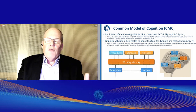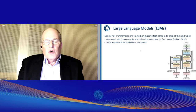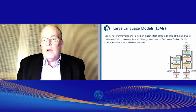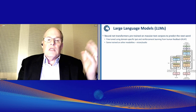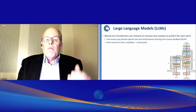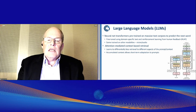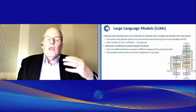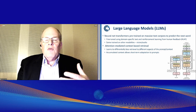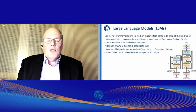We've seen a flood of work on language models. My quick way of describing them: they are neural net transformers pre-trained on massive text corpora to predict the next word, and they can be fine-tuned with additional text and reinforcement learning from human feedback — sometimes trained on other modalities. What I find amazing is this idea of attention-mediated context-based retrieval, where the system learns what aspects of the prompt it should pay the most attention to. That was one of the key insights that led to their impressive behavior. They have context that does lead to short-term adaptation, but it does not lead to long-term learning.